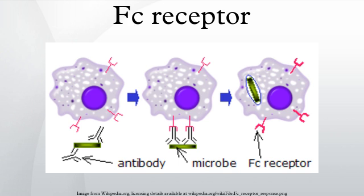FC receptors on eosinophils: Large parasites like helminths are too large for ingestion by phagocytes. They also have an external structure called an integument that is resistant to attack by substances released by macrophages and mast cells. However, these parasites can become coated with IgE and recognized by FcεRI on the surface of eosinophils. Activated eosinophils release preformed mediators such as major basic protein and enzymes such as peroxidase, against which helminths are not resistant.